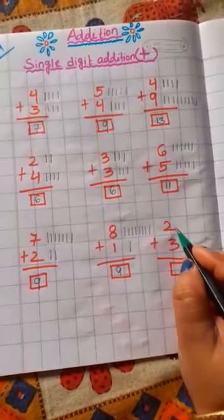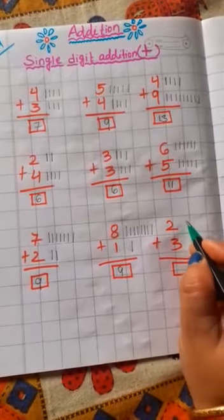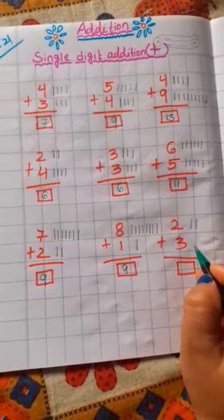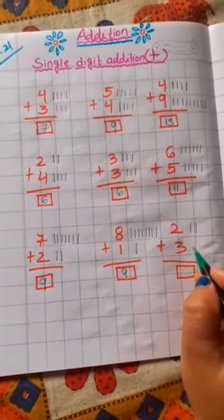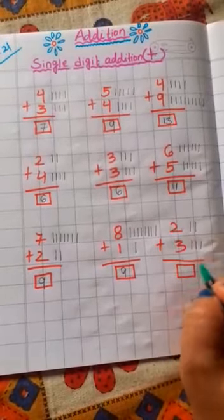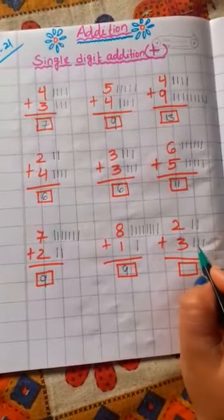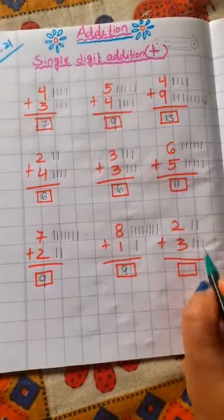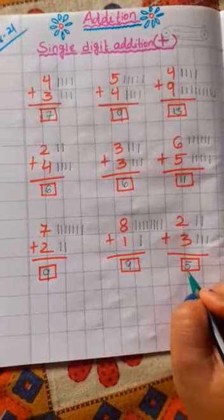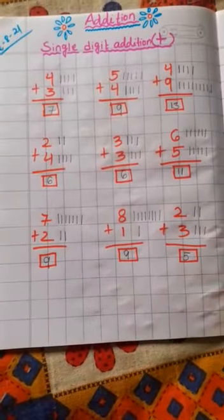Now next number. Which number is this? The first number is 2. You draw here 2 lines: 1, 2. Now which number is this? 3. Here you draw how many lines? 3 lines. Very good: 1, 2, 3. Now children, count all the lines together: 1, 2, 3, 4, 5. Your answer is 5. 2 plus 3 is equal to 5. Okay children, this much is for today. Thank you. Have a good day. Bye.